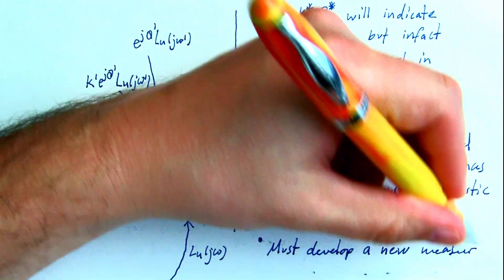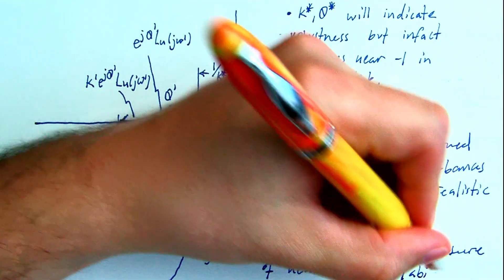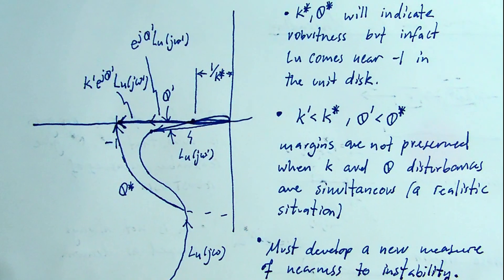So a new measure of nearness to instability or measure of robustness is needed that considers simultaneous gain and phase disturbance. That's a topic for the next video.